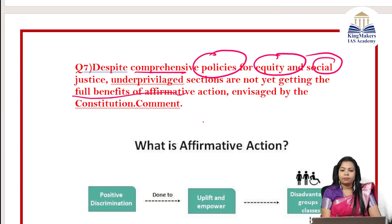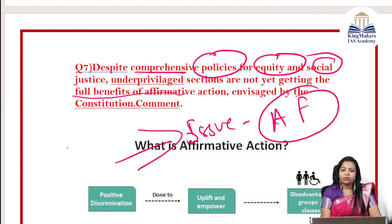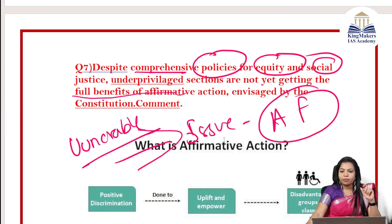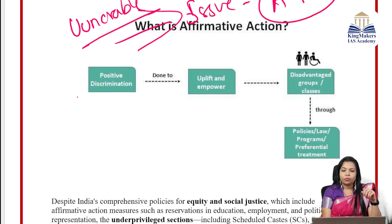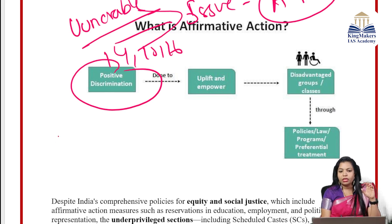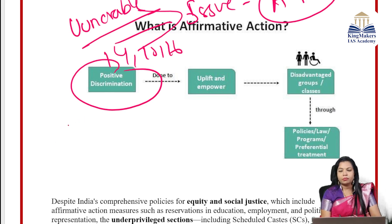Tenth question — the Public Examination Prevention of Unfair Means Act 2024. This was passed and came into force. Discuss whether university, state education board exams should be covered under it. This was a current affairs question. This Act was needed because of recent incidents of exam irregularities — that is why the Public Examination Prevention of Unfair Means Act 2024 was enacted. The Act's purpose: to prevent unfair practices, punish offenders, safeguard the integrity of examinations, and act as a deterrent. Penalties are defined within the Act.